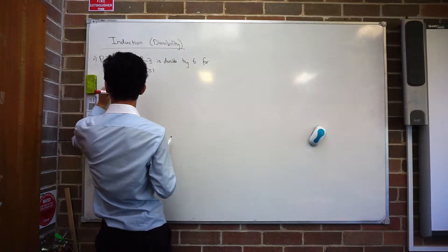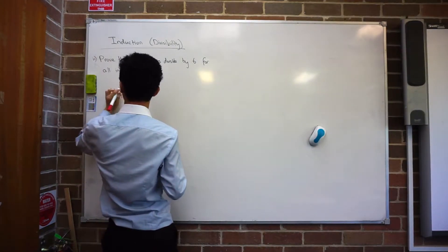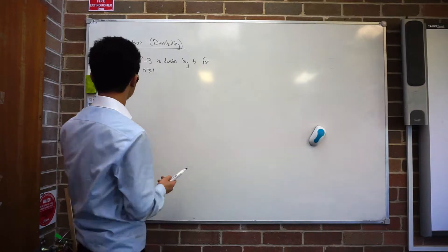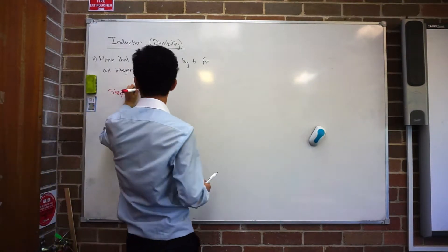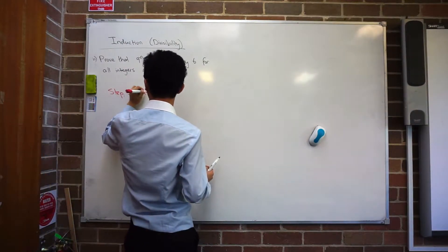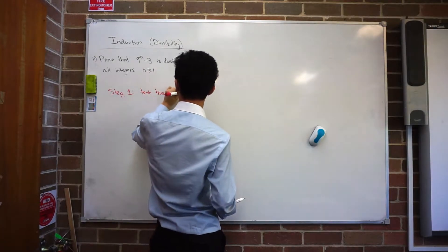So step 1, Arman, what did we write? Test for n equals 1. Okay, so step 1, test 9^n minus n equals to 1.